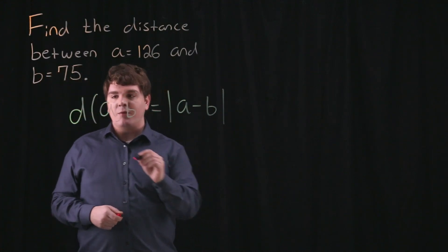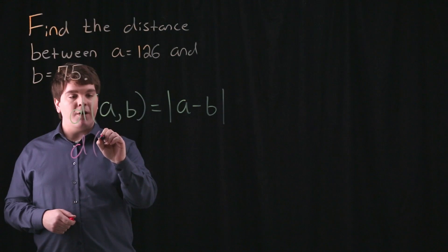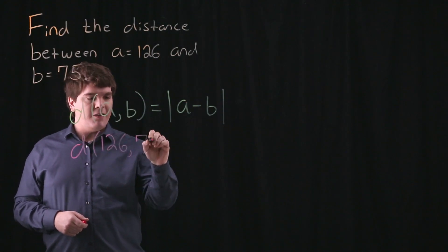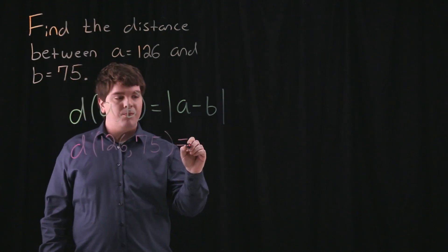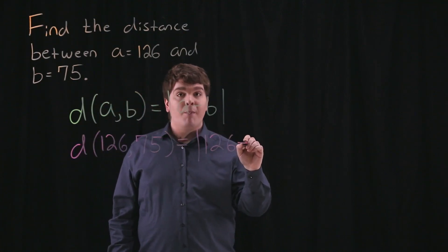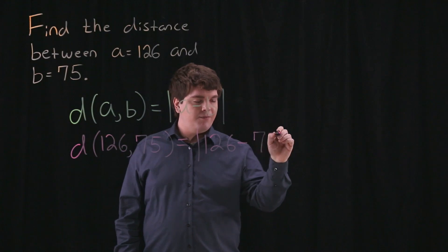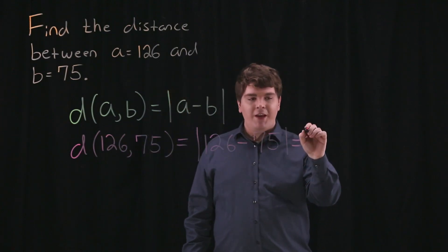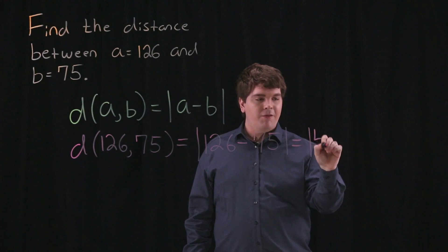So the distance between 126 and 75 is equal to the absolute value of 126 minus 75, which is equal to the absolute value of 51.